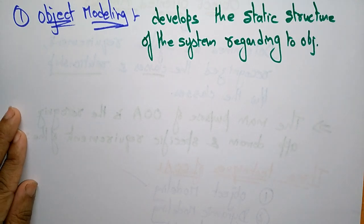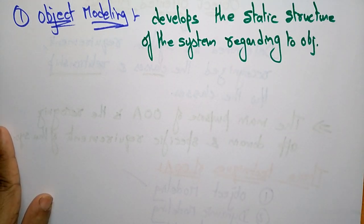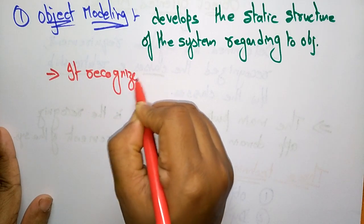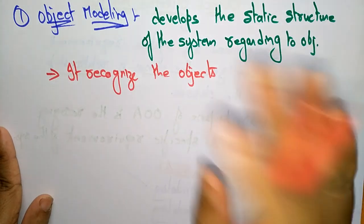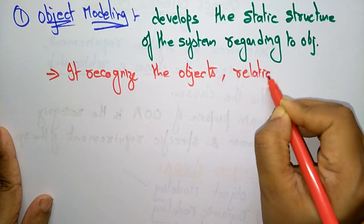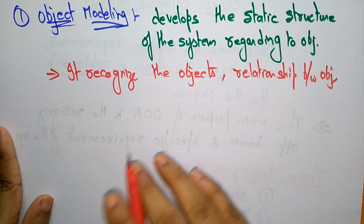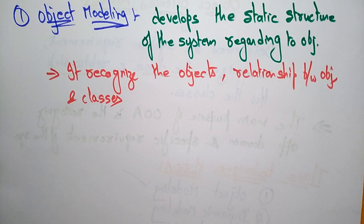The main aim of object modeling is to recognize the static structure of the system — the objects related to the static. It recognizes the objects present in the requirements, the relationships between those objects, and the classes in which the objects are grouped.